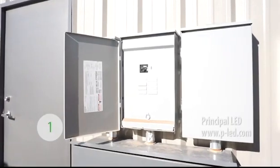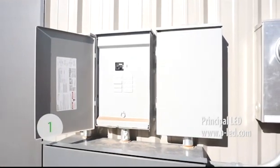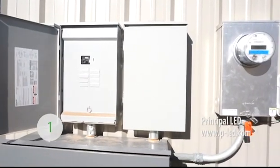First, disconnect the primary power to the cabinet. This should be done at the breaker box and not just at the sign.